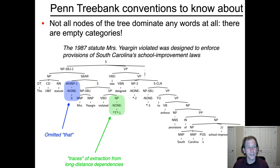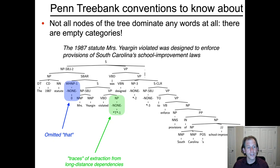There are also the empty categories that occur in unbounded dependencies. 'Mrs. Juergen violated' is an object-extracted relative clause — the object of 'violate' is extracted and appears higher up. That extraction is represented by a T, which stands for trace, going back to the syntactic theory of the time. T is an empty category marking an extraction position.